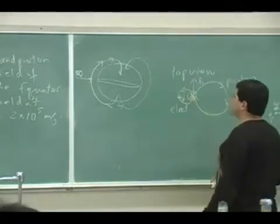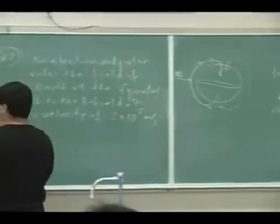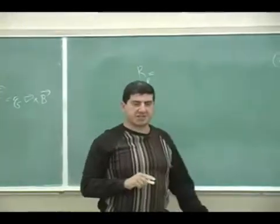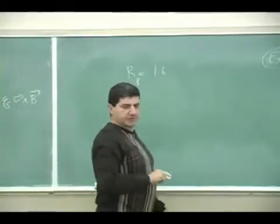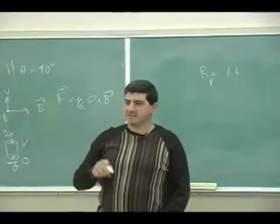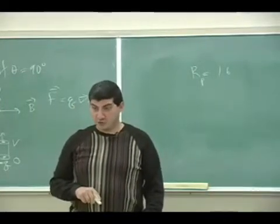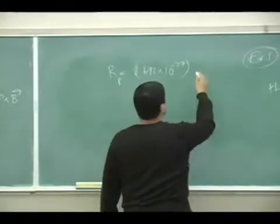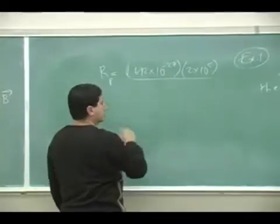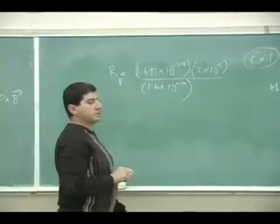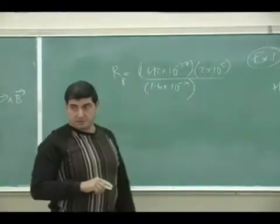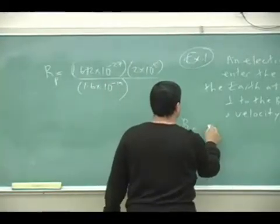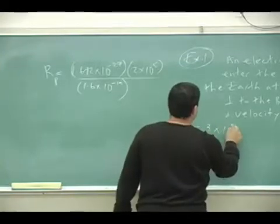The radius is going to be what? The mass of the proton is 1.672 times 10 to the negative 27 kilograms. The velocity was given. Over the charge times the B field. What is the B field of the Earth?